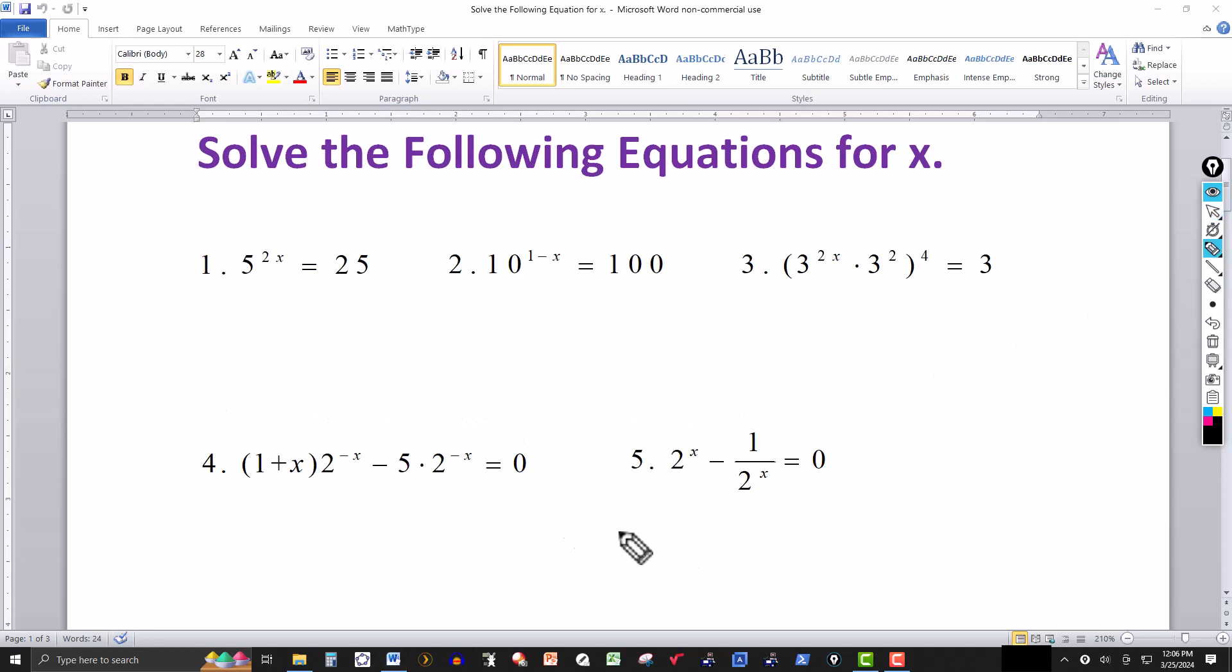So in the first one here we have 5 to the 2x, on the right side we have 25, but remember 25 is the same thing as 5 squared. So now we have the same base on both sides, base is positive and not equal to 1.